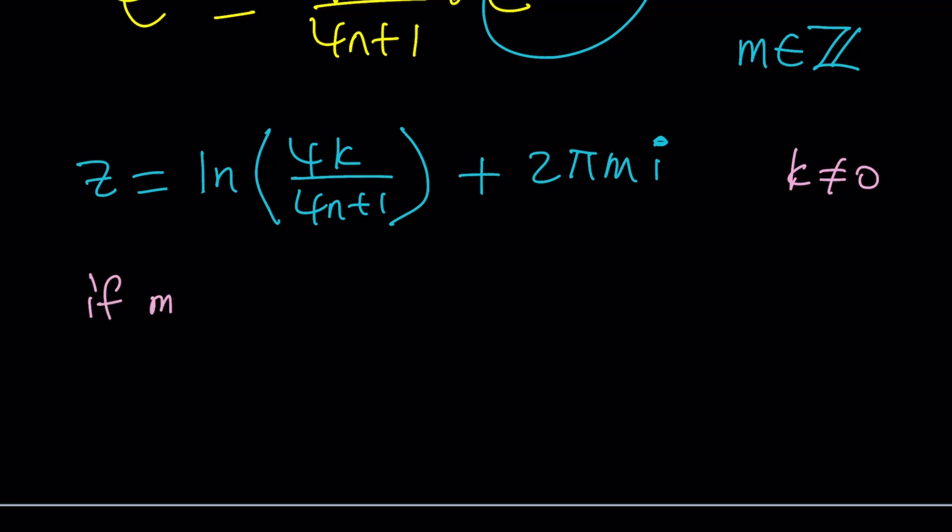If m and n are 0, then z becomes ln 4k. Yay, so z can be real, really interesting, right?